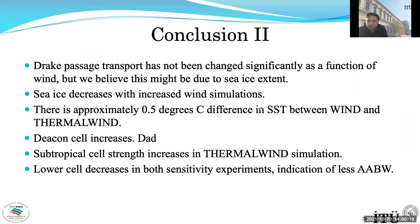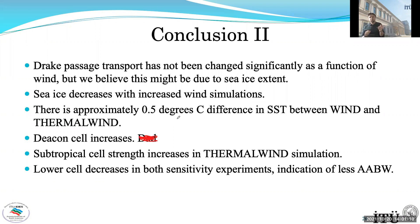In final conclusions for the Southern Ocean: Drake Passage transport does not show changes in this set of simulations, likely because sea ice extent is not much reduced here, but a different set of simulations with reduced sea ice does show an effect. In both sensitivity experiments, sea ice decreases — meaning we should expect a decrease in Southern Ocean sea ice under anthropogenic global warming. Subtropical cell strength increases in the thermal experiment but not in the wind-only simulation. The lower cell — associated with Antarctic Bottom Water formation — decreases, suggesting that deep water formation may reduce when we apply these kinds of wind change scenarios.